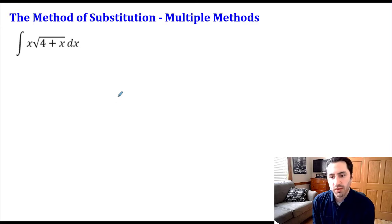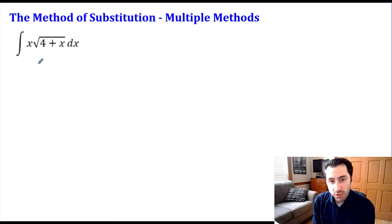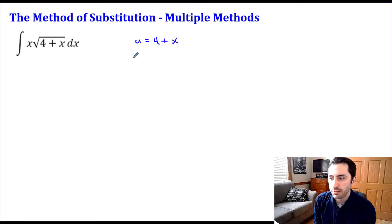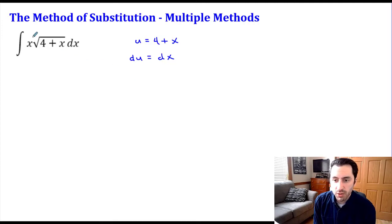Looking at this integral, what's underneath our square root sign is (4 plus x). If I take the derivative of that I end up with just 1, but that doesn't work out too nicely with the x out front. So I'll need to use a clever substitution. For the first method, let's let u equal (4 plus x) — that's what's underneath our square root sign. The derivative of 4 is 0, the derivative of x is 1, so du equals dx. Underneath the square root, (4 plus x) will be substituted with just u, and dx is substituted with du.